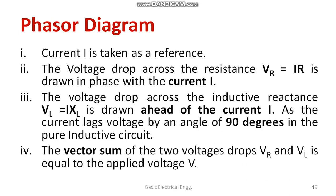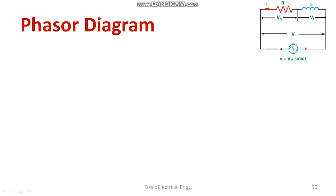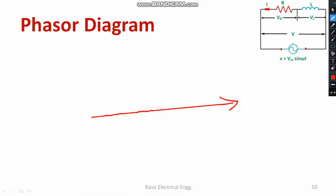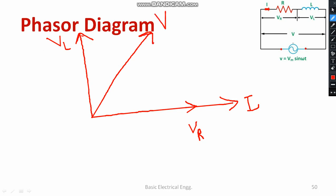Through the phasor diagram, the vector sum of the two voltages VR and VL gives the resultant voltage. To draw the phasor diagram: the same current I is the reference. The voltage drop across the resistor is VR = I × R, drawn along the current direction. The inductive voltage VL leads the current by 90 degrees. Then draw the resultant voltage by completing the parallelogram.